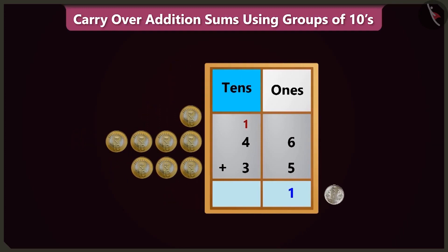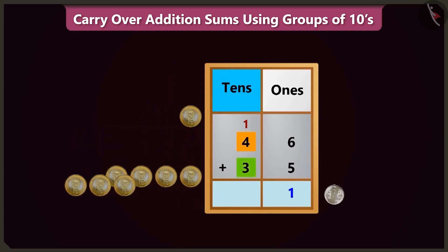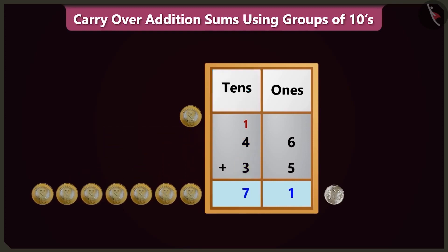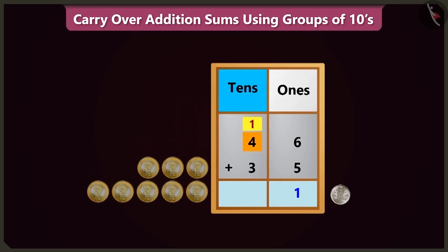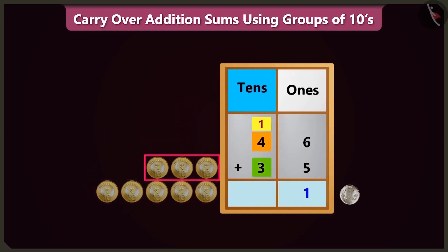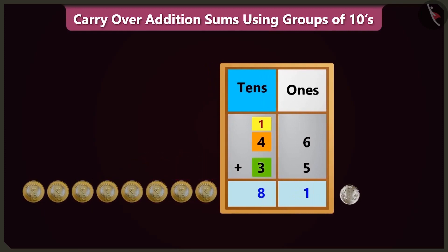Now in the tens box, adding 4 and 3 should make 7 — but wait, we must not forget the carry-over written in the tens box. Adding the carry-over 1 to 4 makes 5, and adding 5 and 3 makes 8. The total amount is 81.